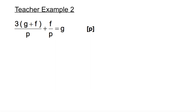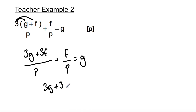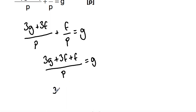Expanding: 3 times g is 3g, and 3 times f is 3f, so we have 3g over p plus 3f over p plus f over p equals g. Now p is a common denominator, so this can be rewritten as 3g plus 3f plus f over p equals g. Simplifying by adding 3f and f together, we get 3g plus 4f over p equals g.